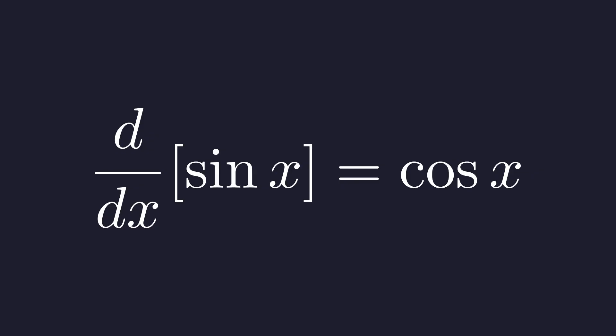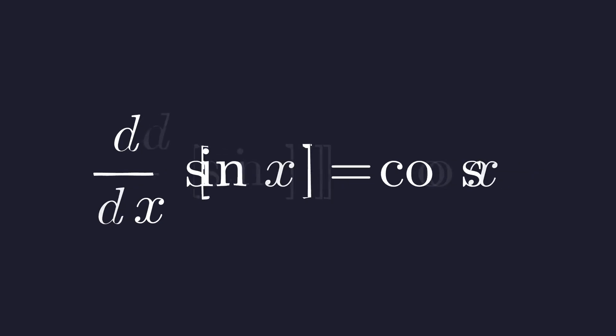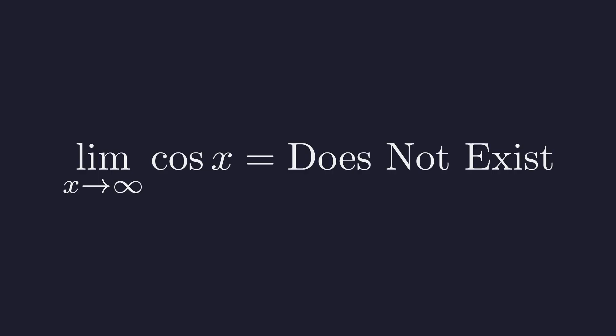Taking the derivative of sine x gives cosine x, but here's the problem. Cosine of x oscillates forever between negative 1 and 1. It never settles. L'Hopital's rule requires the numerator to approach a limit. And here, it just won't. The rule fails completely.